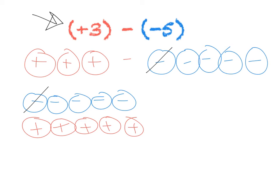Now I can cross out all my blue counters because that's what I'm subtracting. Five blue counters. Take away five blue counters equals zero.